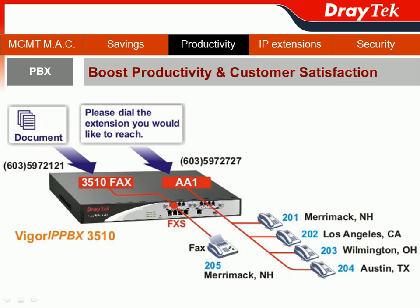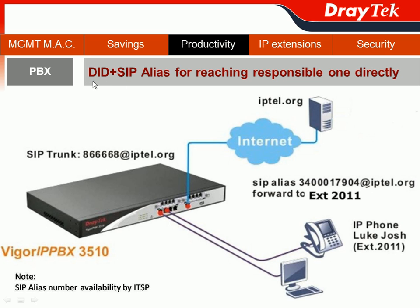We will use actual business scenarios and configuration steps provided by VIGOR IPvX 3510 to prove how it can boost productivity and enhance customer satisfaction. First, we will introduce the dial-in plus SIP alias feature for reaching a responsible person directly, even via SIP code. From the previous configuration step, we know SMB registered one SIP account at IPTEL. The actual SIP account number is 8468 at IPTEL.ORG, and IPTEL provides a bunch of SIP alias numbers to XYZ company.